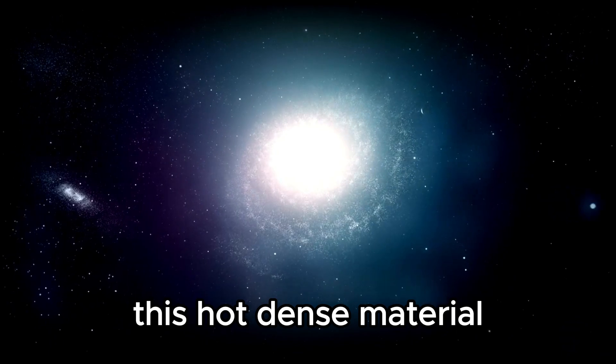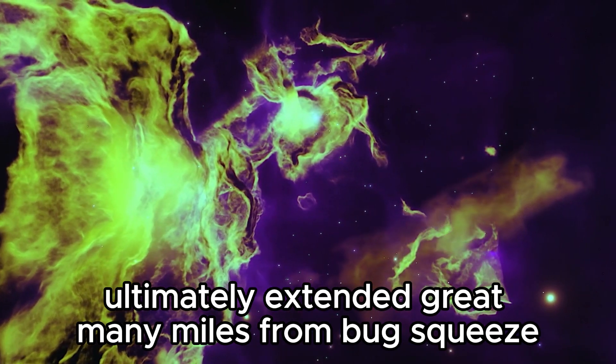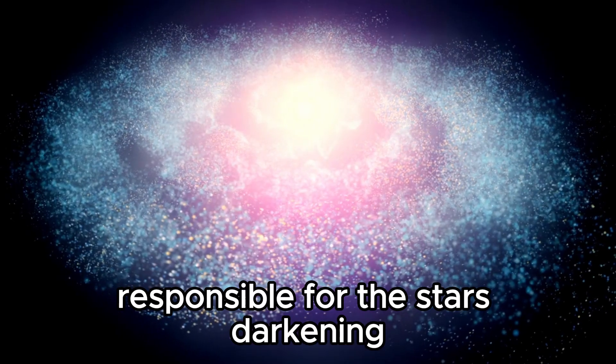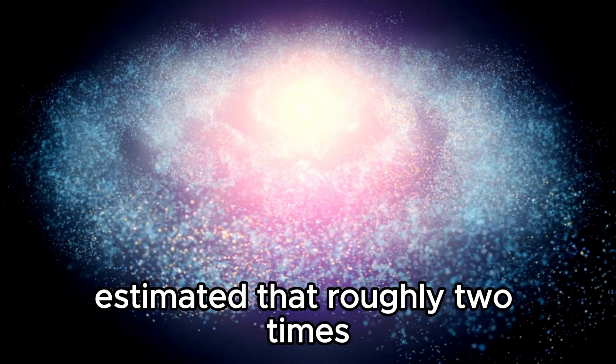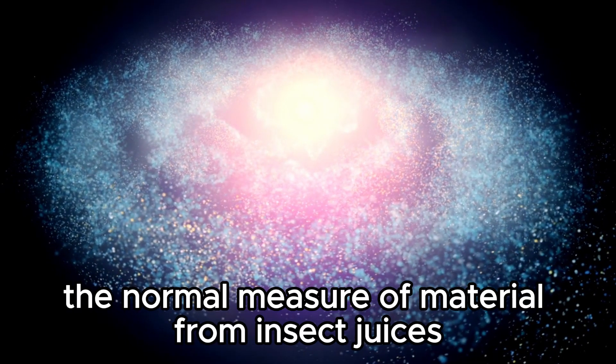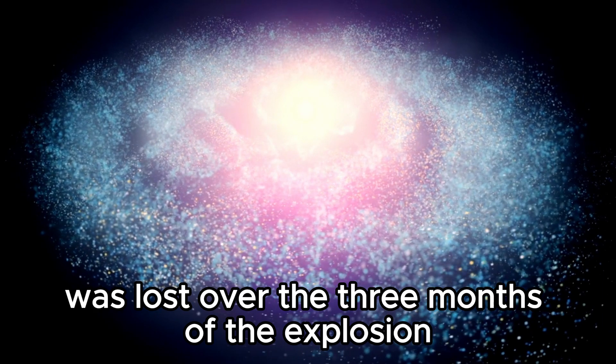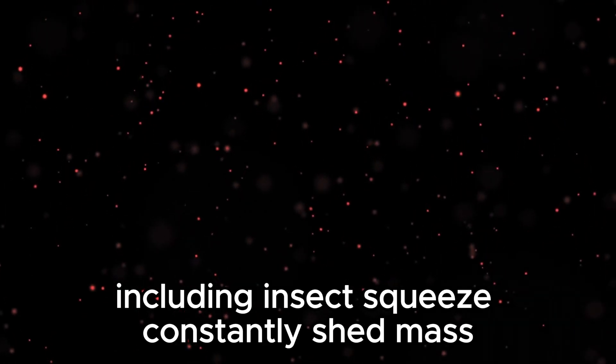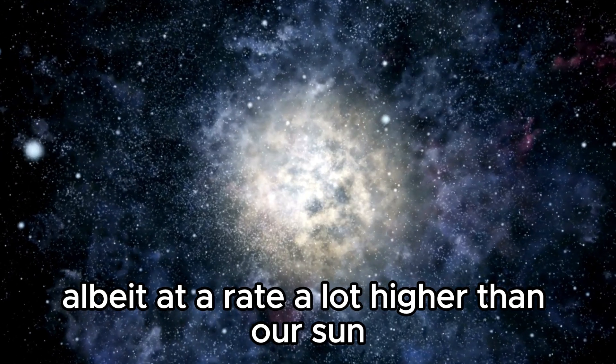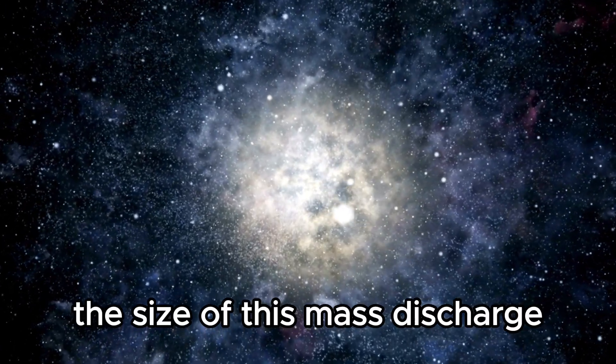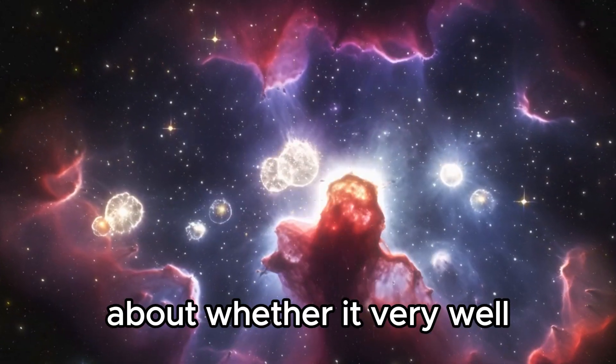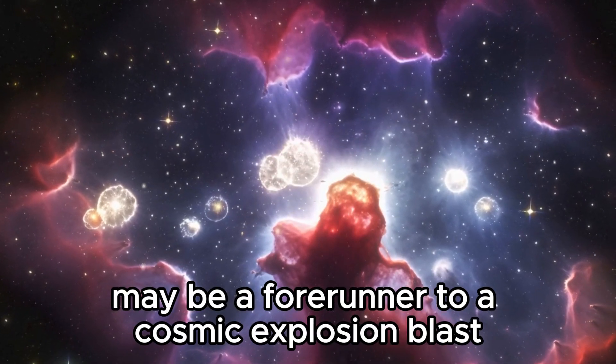This hot, dense material ultimately extended thousands of miles from Betelgeuse and preceded the formation of the dust cloud responsible for the star's dimming. Dupree and her team estimated that roughly two times the normal amount of material from Betelgeuse's southern hemisphere was lost over the three months of the outburst. A significant mass loss, considering that all stars including Betelgeuse constantly shed mass, albeit at a rate much higher than our sun. The scale of this mass discharge and the resulting dimming prompted discussions among astronomers about whether it could be a forerunner to a supernova blast.